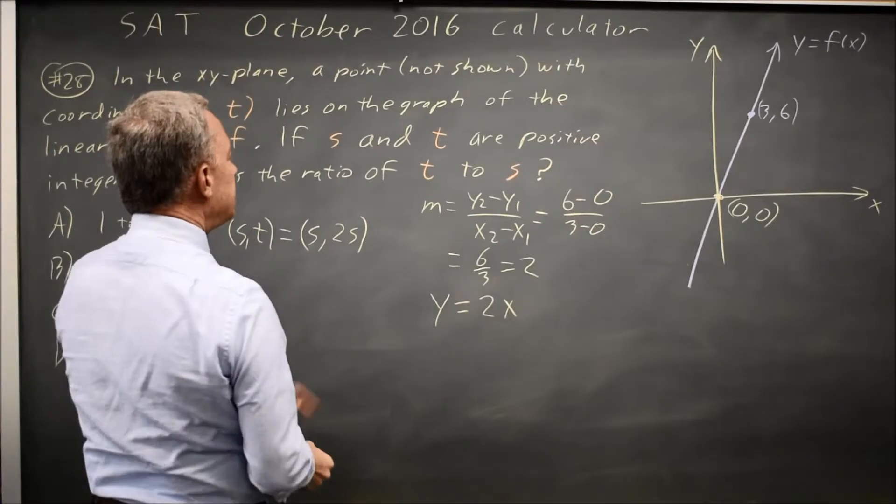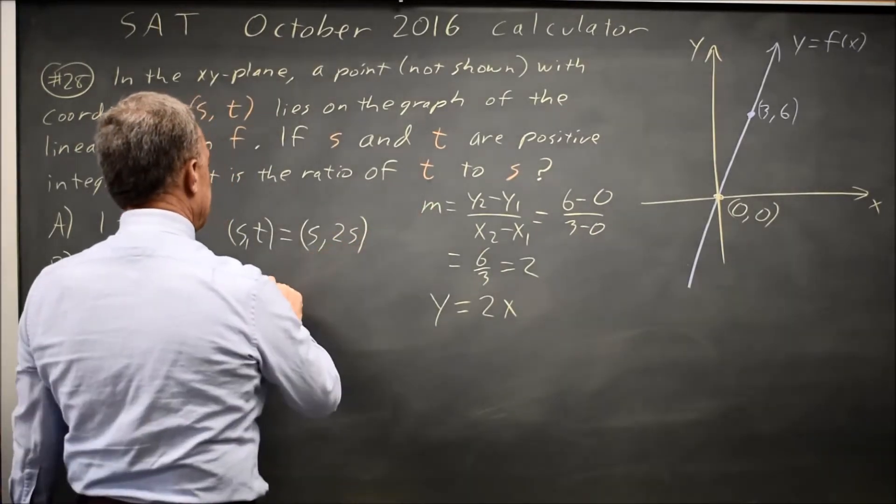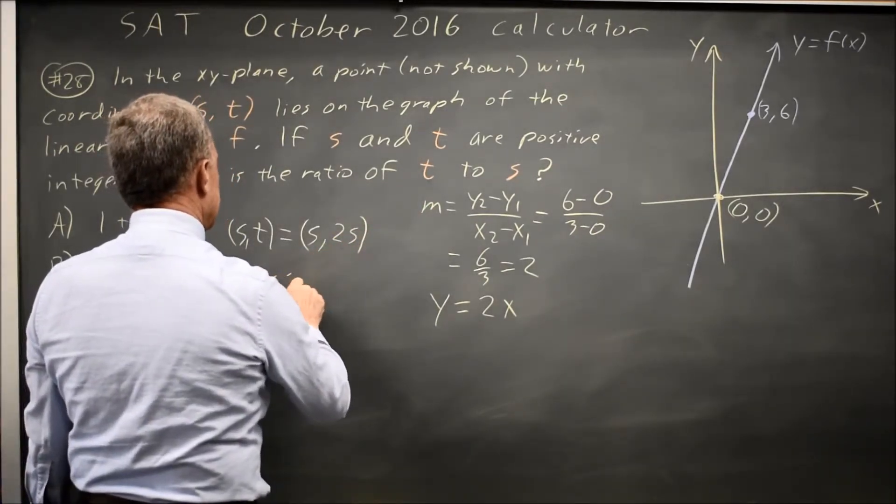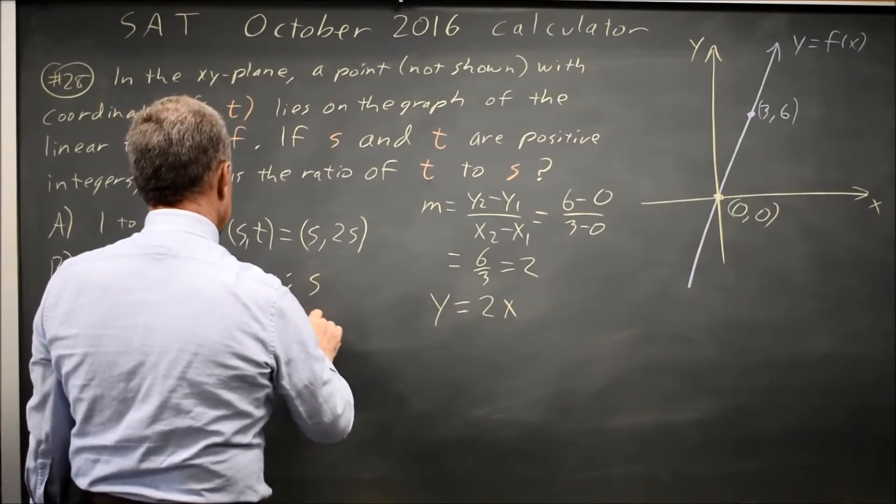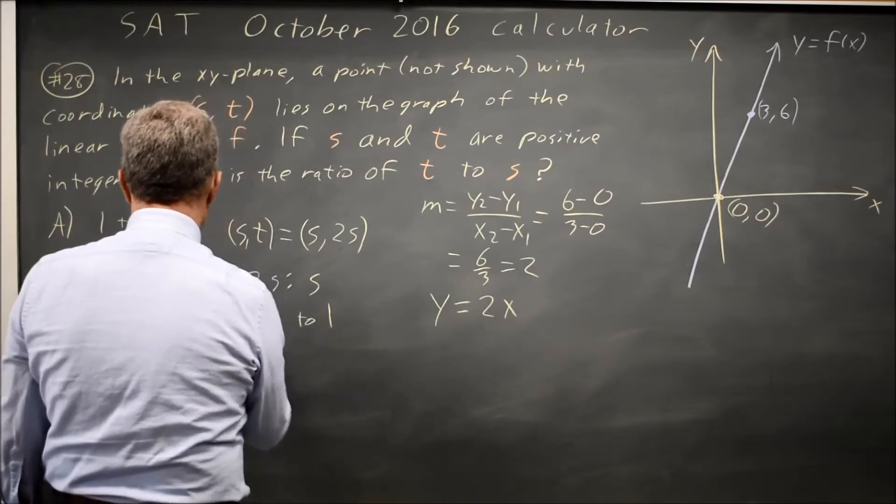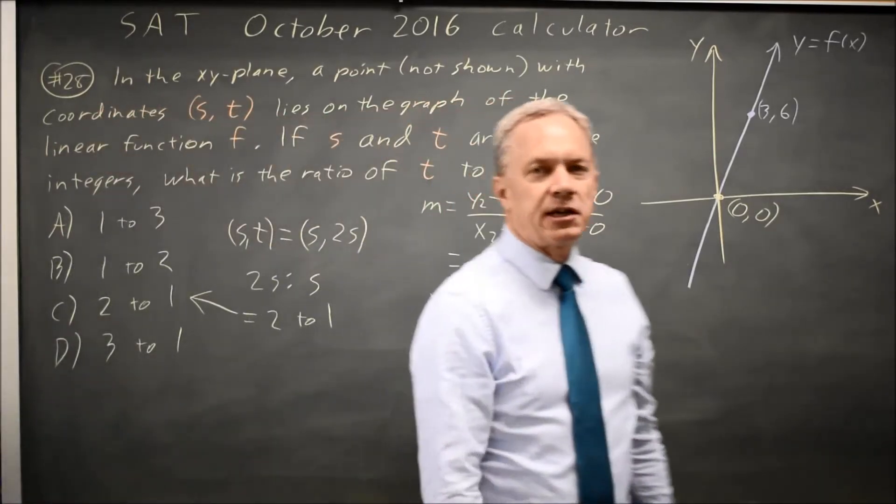And the ratio of the y coordinate to the x coordinate is 2s to s, which is the same as 2 to 1, which is answer choice C.